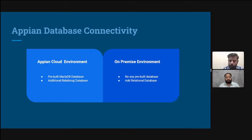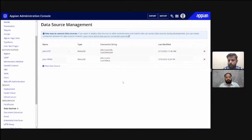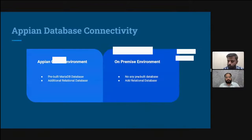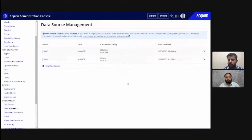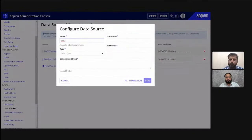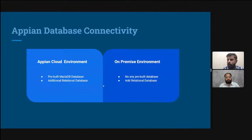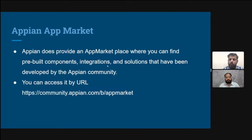The cloud environment has one prebuilt MariaDB database and you can also connect additional relational databases — it's very easy. Once connected, you can create tables, views, or other database artifacts and call them in Appian using Appian-provided components. In on-premise environments, Appian does not provide any prebuilt database — you must add your own relational database, hosted on your server, and configure the connection string in the same way.